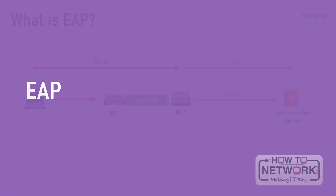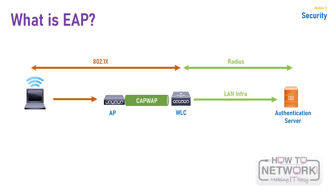Now let's talk about EAP. The 802.1X architecture neither contains protocol specifics for wireless clients to send their credentials to the authentication server, nor specifies how authentication should occur. To solve this problem, the IETF designed the Extensible Authentication Protocol, or EAP. EAP is a general protocol for authentication that also supports multiple authentication methods such as token cards, Kerberos, one-time password certificates, public key authentication, and smart cards. EAP does not specify which type of authentication to use; it simply defines the authentication steps and headers.